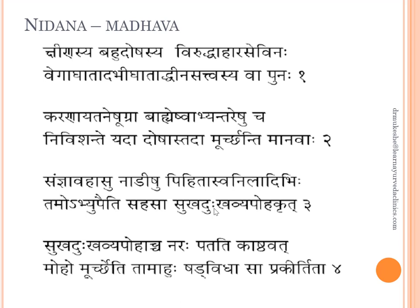Also Viruddhaharasevinaha, Vegarodha, Abhighata — traumatic causes of loss of consciousness — and Hina Sattvasya, when the mind is predisposed with Alpa Sattva. The Doshaprakopa occurs and takes seat in Karanayataneshu — the Indriyas and Manas — and ultimately these Doshas obstruct the Sanjnavahi Nadis. 'Tamo Abhyubedisahasa' — the patient falls into Tamas and is unable to differentiate between Sukha and Dukha. 'Naraha Patadi Kashtavad' — the patient falls down.